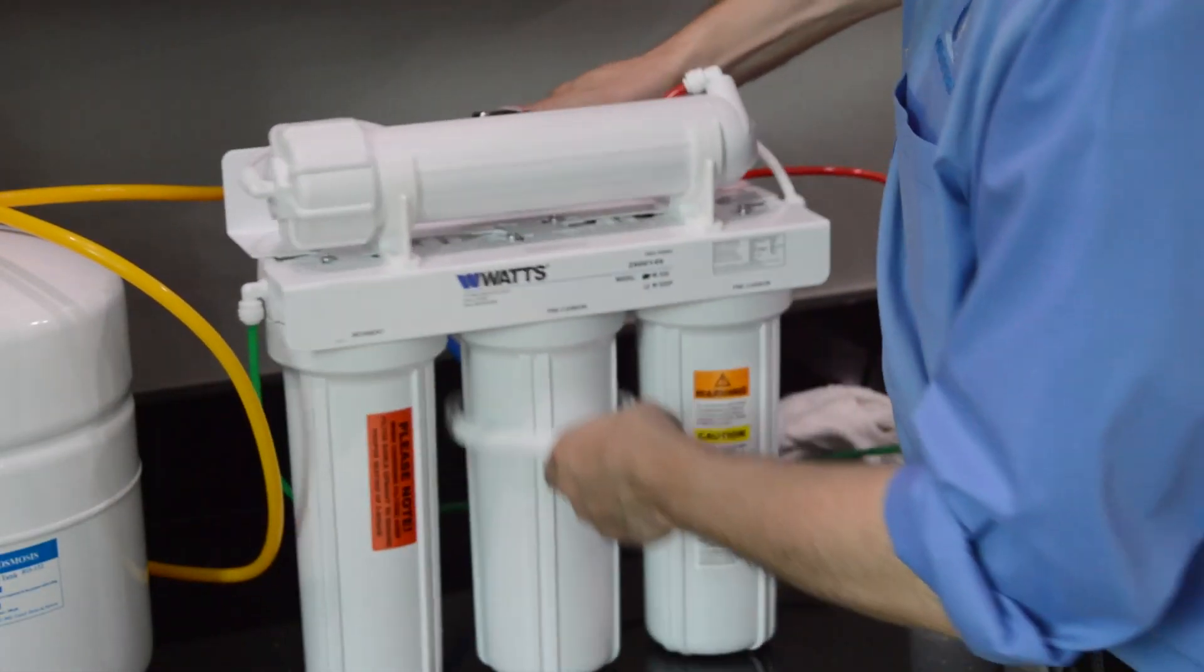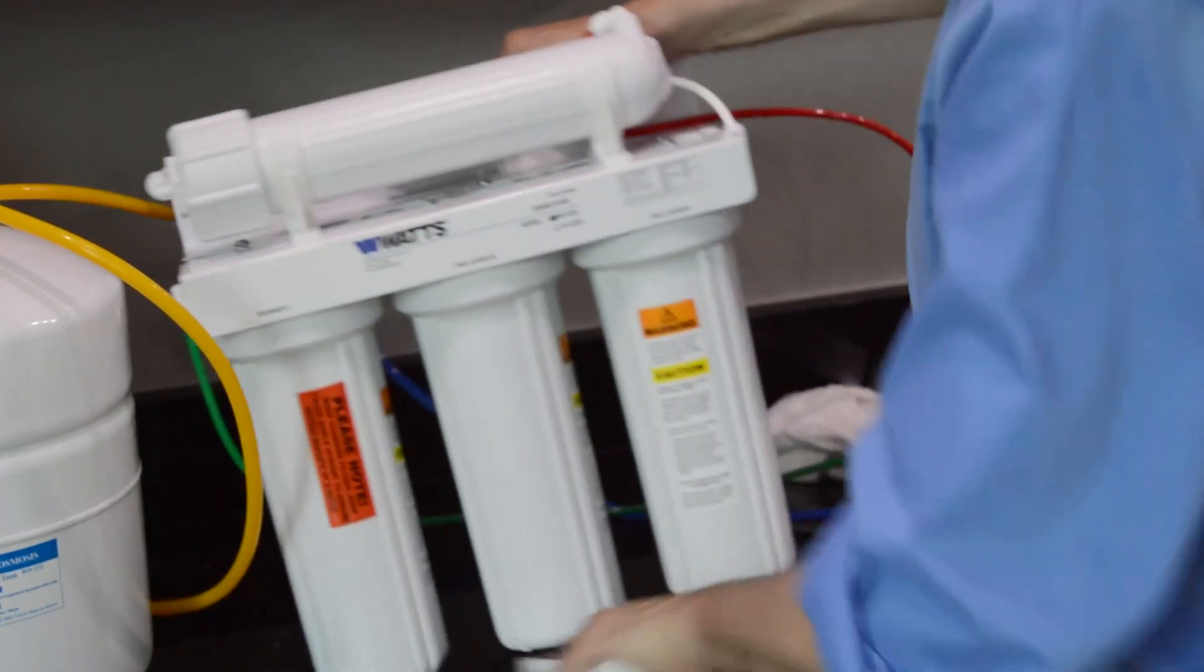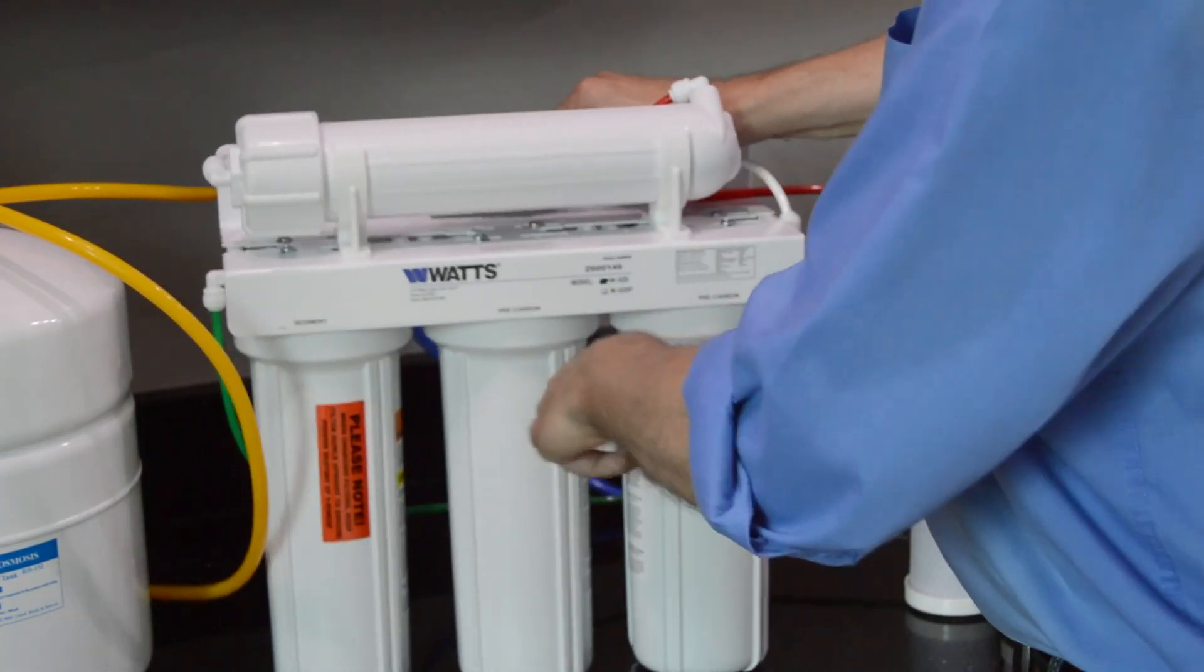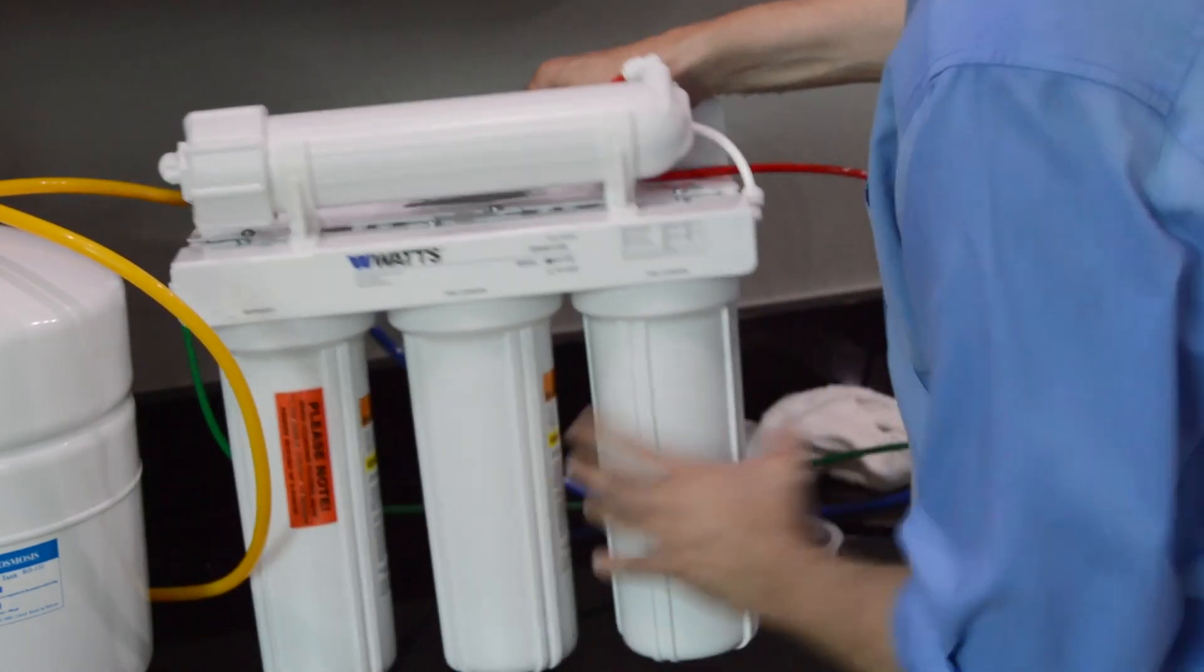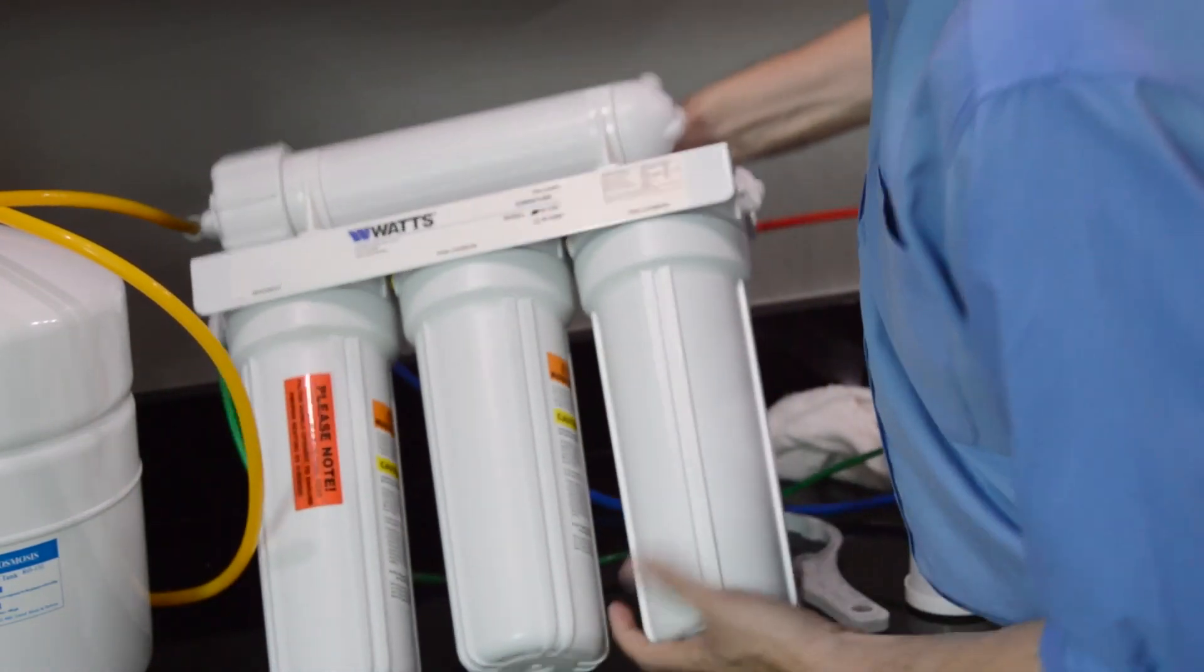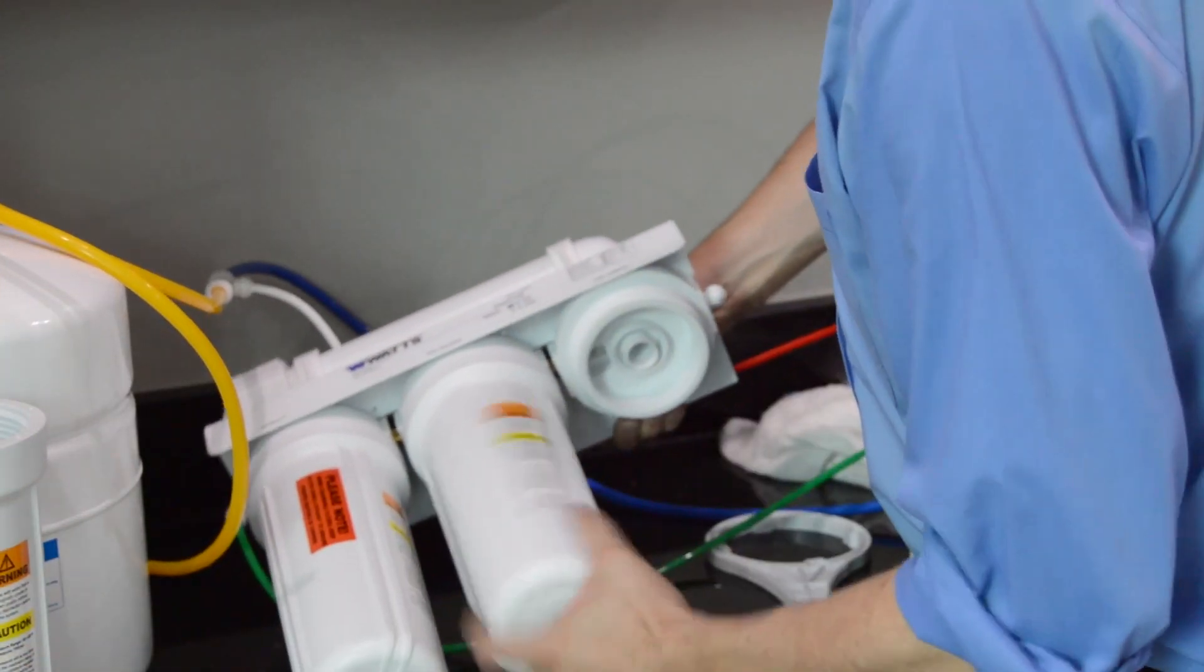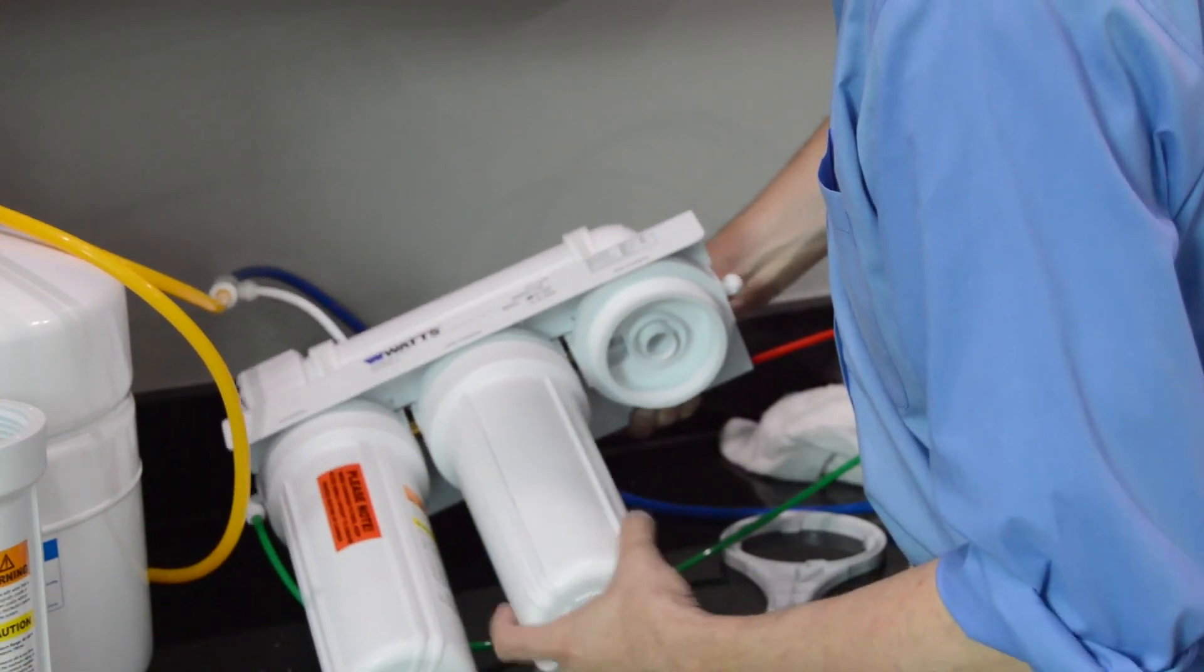Use the filter wrench to loosen both carbon block pre-filter housings. Remove both carbon block pre-filter housings. Remove the old filters and pour out any excess water.